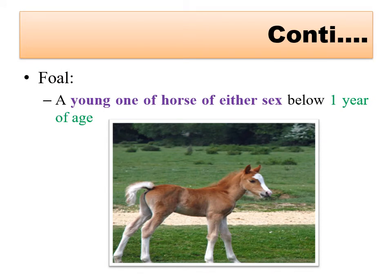A foal is a young one of horse of either sex up to one year of age. The male or female young one of horse up to one year of age is called a foal - F-O-A-L.